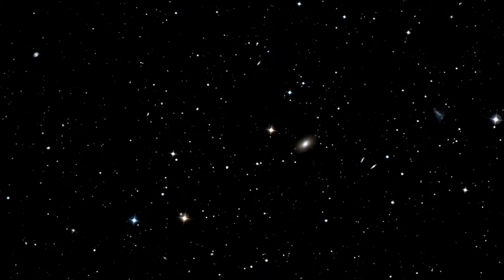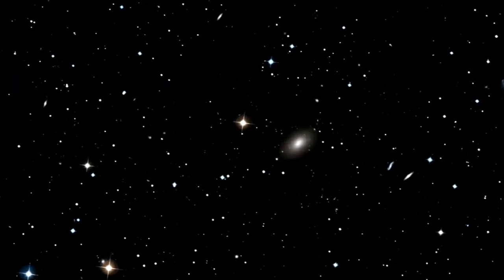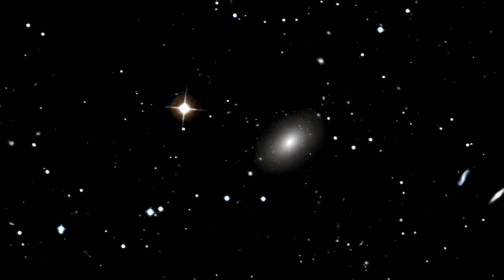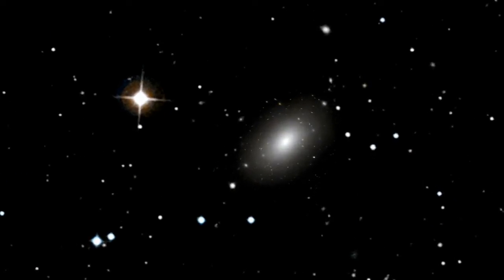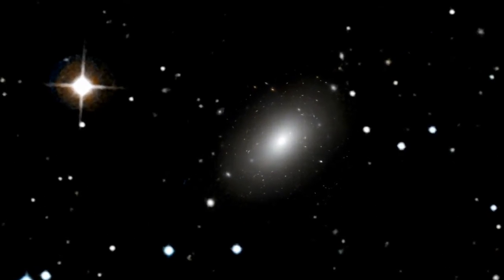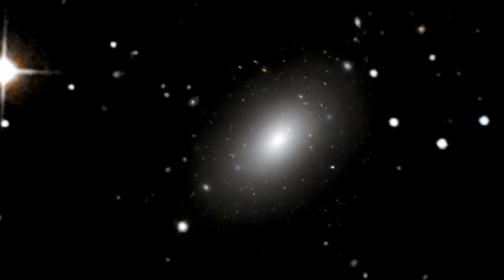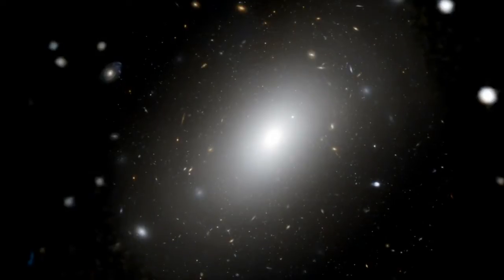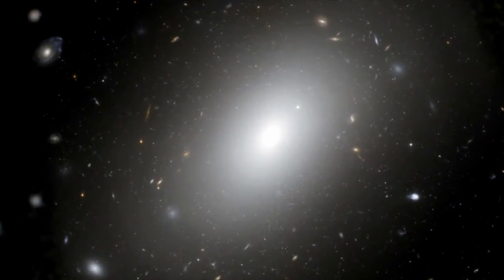But closer up, we see that NGC 1132 is rather special. It's humongous. Many times larger than the average elliptical galaxy, it belongs to a category of galaxies called giant ellipticals. Seen in visible light, NGC 1132 appears as a single, almost isolated, giant galaxy.